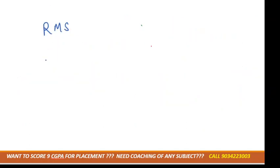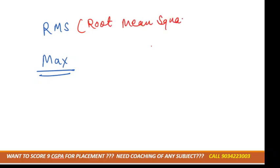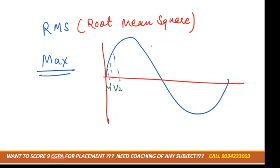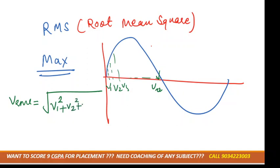Now, is this 220 volts a maximum voltage or an RMS voltage? There are two types: RMS voltage and maximum voltage. RMS means root mean square. Suppose we have a sinusoidal voltage — at every instant of time we measure the voltage: v1, v2, v3, up to vn.